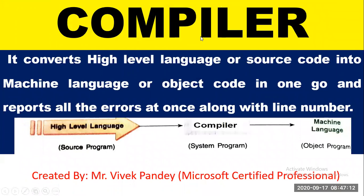What is compiler? This language processor converts high-level language, or source code, into machine language, or object code, in one go, and reports all the errors at once along with line number.